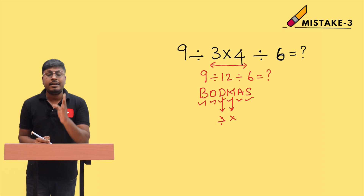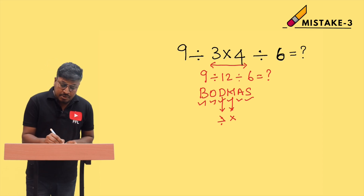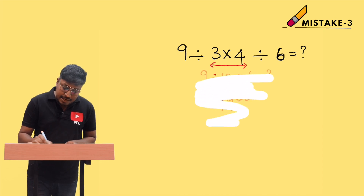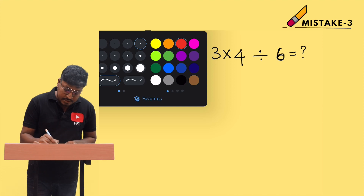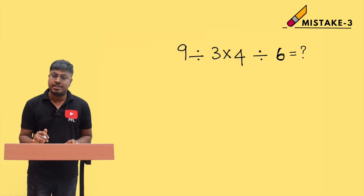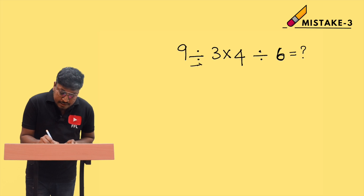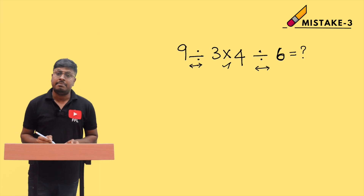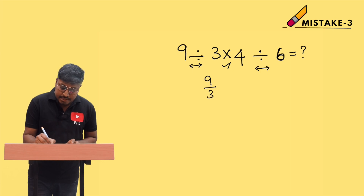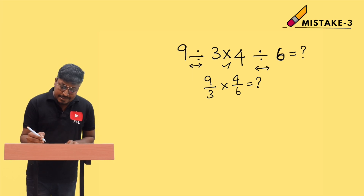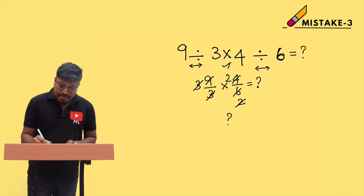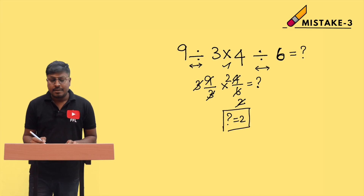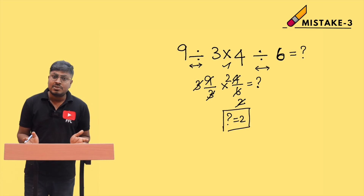According to the question — 9 ÷ 3 × 4 ÷ 6 — you have division in two places, so divide first and then multiply. Cancel using the 3-times table: 9 ÷ 3 = 3, and 4 ÷ 6 simplifies as well. Working through the cancellations, the answer is 2. So the question mark equals 2.